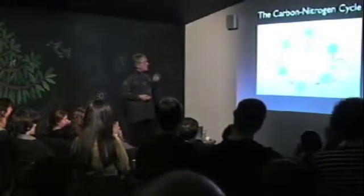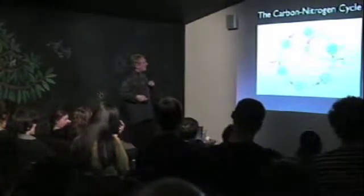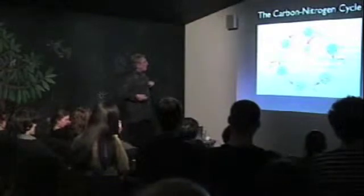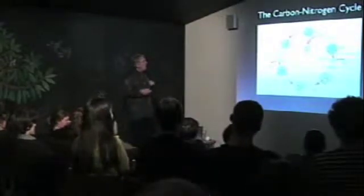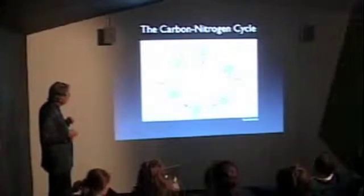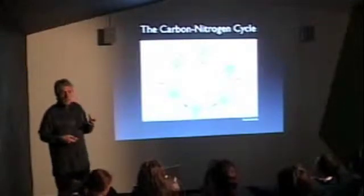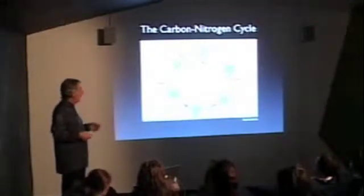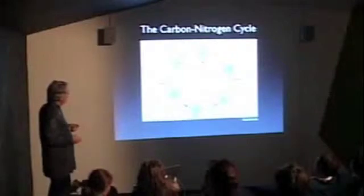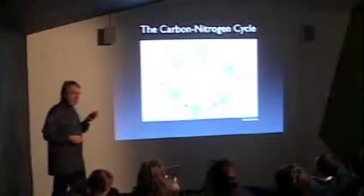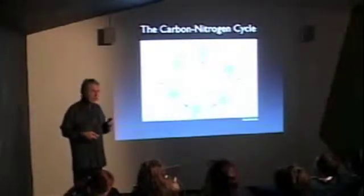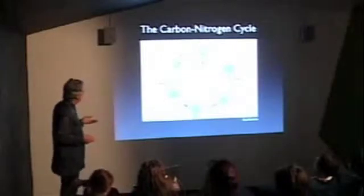And stars bigger than our Sun use this process. Basically, it uses carbon, and you add protons through these steps, and you end up getting a helium nucleus pop out, and you get back to the original carbon atom. So it's quite an efficient process, but it needs higher temperatures and pressures than our Sun. So bigger stars use this process.